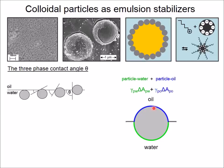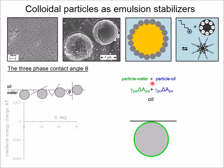When we look closer at a particle at the interface, we can see that it makes up two surfaces: one towards the oil, and a second towards the water. In the field of colloid and interface science, surfaces are always accompanied by surface energies. We can calculate the surface energy by multiplying the surface tension with the corresponding area. This particle has two contributions to its interfacial energy: one is the particle-water interfacial energy, the other is the particle-oil interfacial energy.